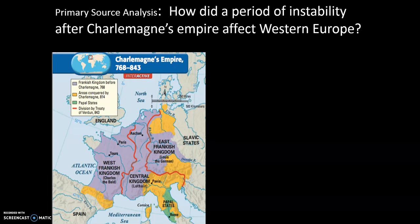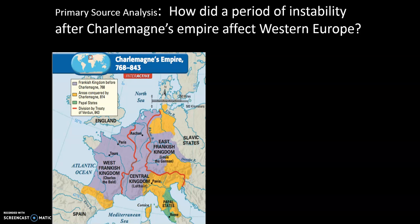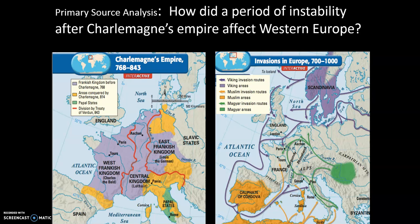Moving on, we're going to start by looking at some sources here — some primary sources in the form of maps. How did a period of instability after Charlemagne's empire affect Western Europe? In this first map, we can see Charlemagne's empire, and the key will be helpful for this analysis. On the right, we have invasions in Europe. Take a look at these maps and think about how you would answer this question.